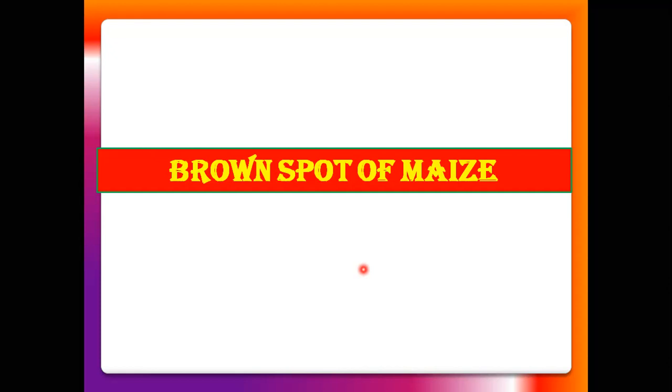In Maharashtra, this brown spot disease is generally seen in all the hybrid varieties of maize grown in Western Maharashtra and Marathwada. Recently — in the last month — this brown spot disease was majorly seen in Aurangabad district in the Marathwada region of Maharashtra state. Losses in maize are near about 15 to 20 percent.